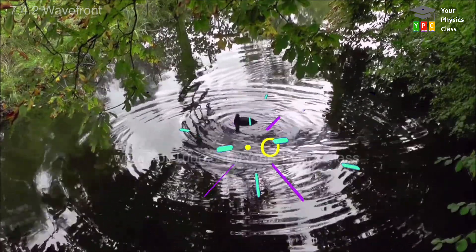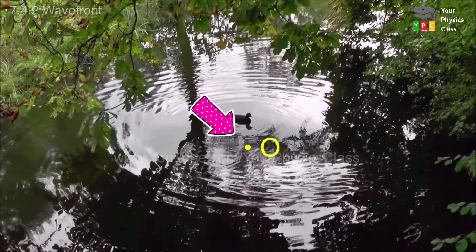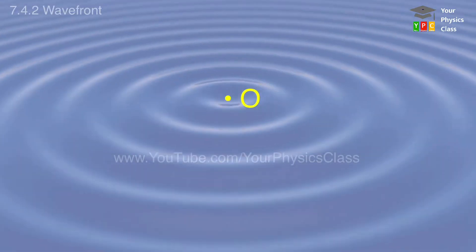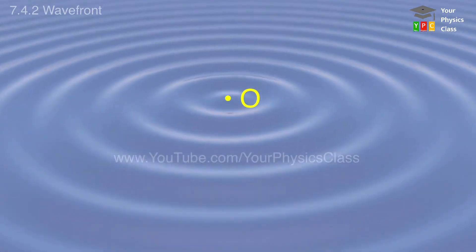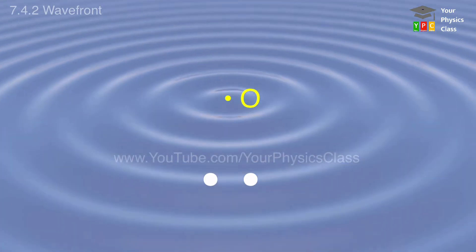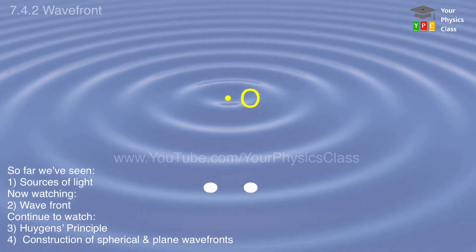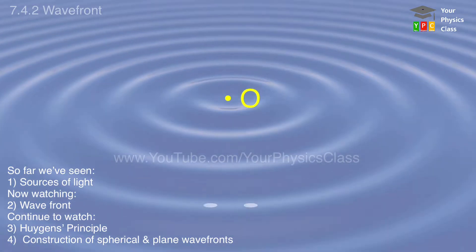When we drop a stone in water, the surface waves commonly known as ripples are generated which travel outward from the point O where the stone touches the water. These ripples advance radially outward. If you consider any two points on the ripple, these two points will vibrate in same phase.